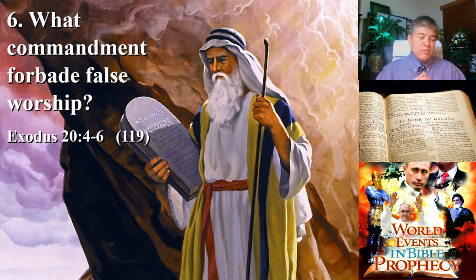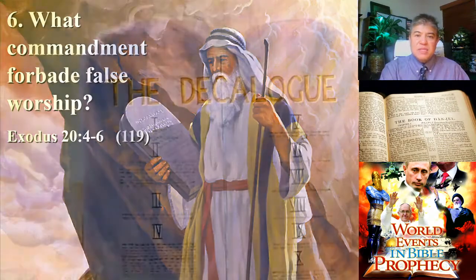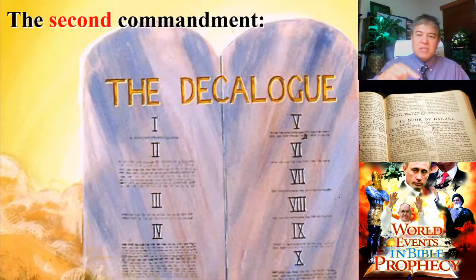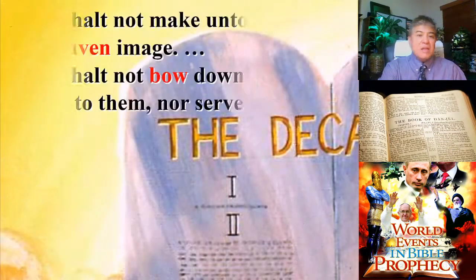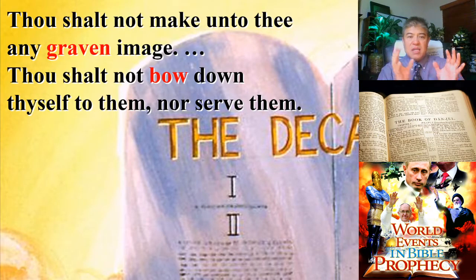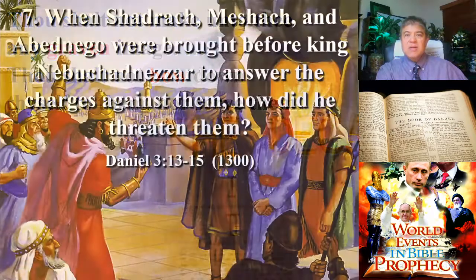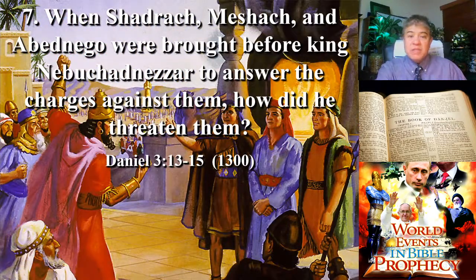What commandment were these Hebrew young men actually obeying? They were schooled in the Ten Commandments. In Exodus chapter 20, verses 4 through 6, God wrote with his own finger in stone — in the second commandment — that thou shalt not have any other graven images and shalt not bow down to them. So these three Hebrews were actually following the Ten Commandments.